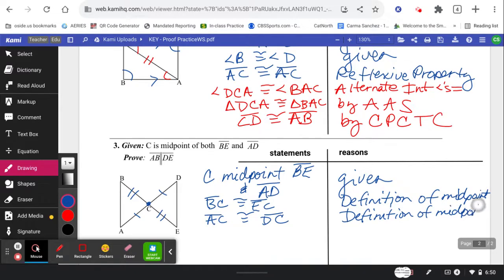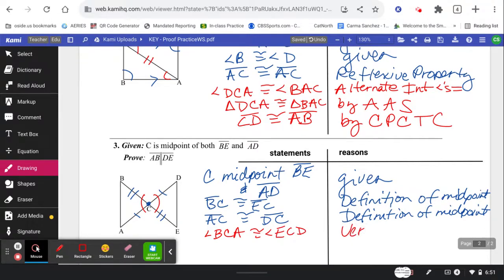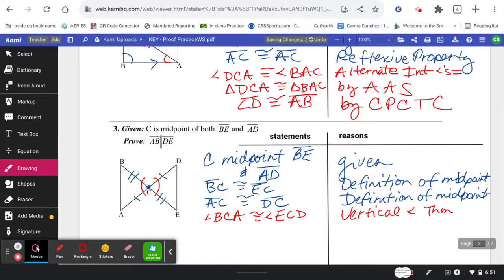And do you see the other part staring at us? The vertical angles. Angle BCA is congruent to angle ECD by vertical angle theorem. Do I have enough for congruency? Yes. So I can say side angle side. Triangle BCA is congruent to triangle ECD by side angle side.